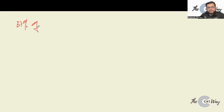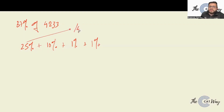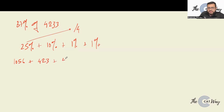Let's try 37% of 4233. We can use 25% + 10% + 1% + 1%. For 25%, divide 4233 by 4: 4 goes once, 23 goes five times, 33 goes roughly six times, giving about 1056. For 10%, it's 423. For 1%, it's 42.33, which we round to 42.